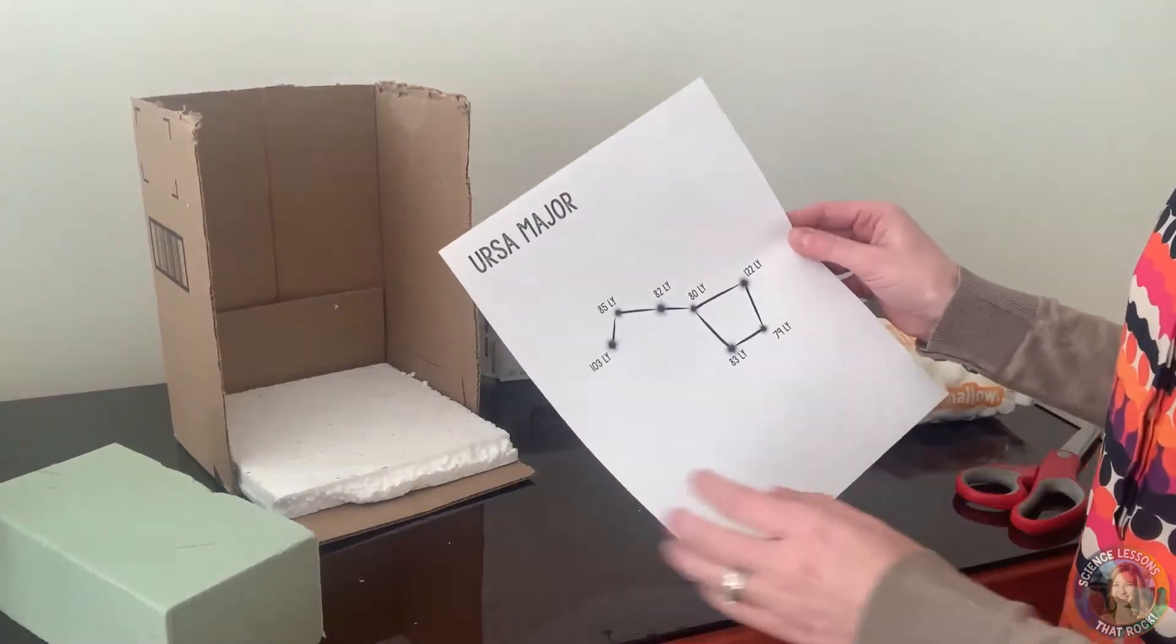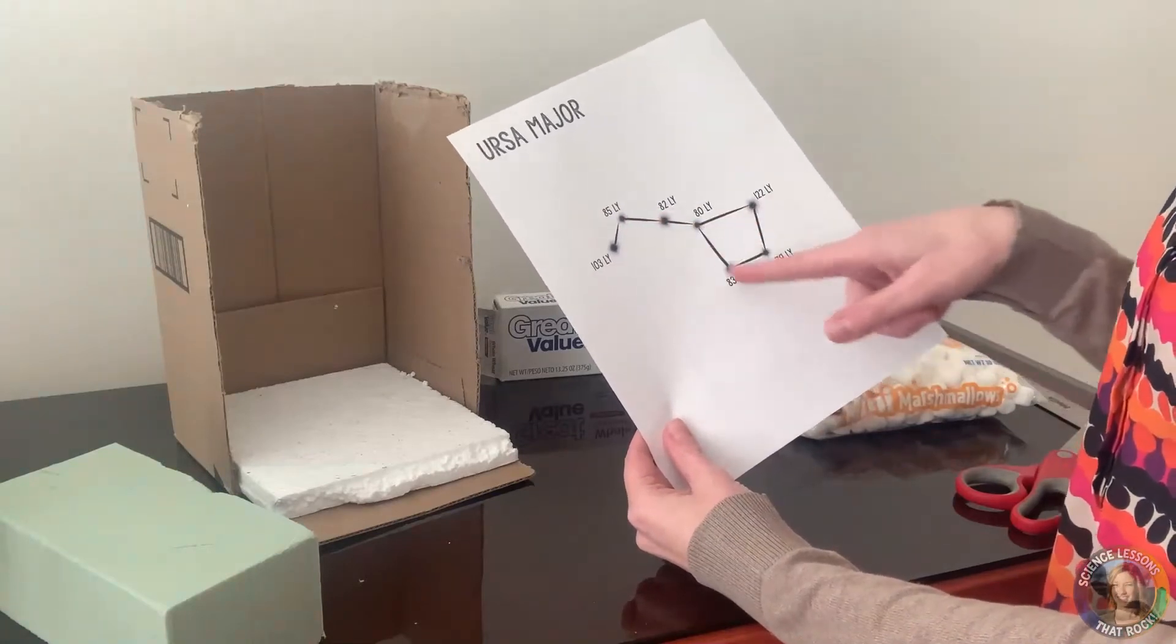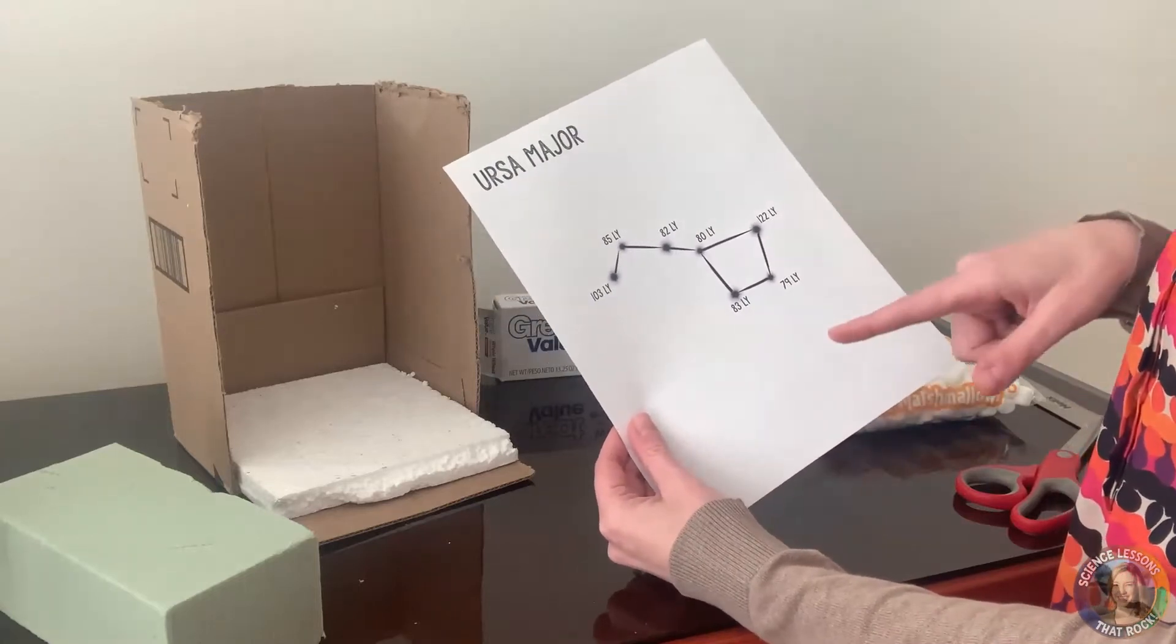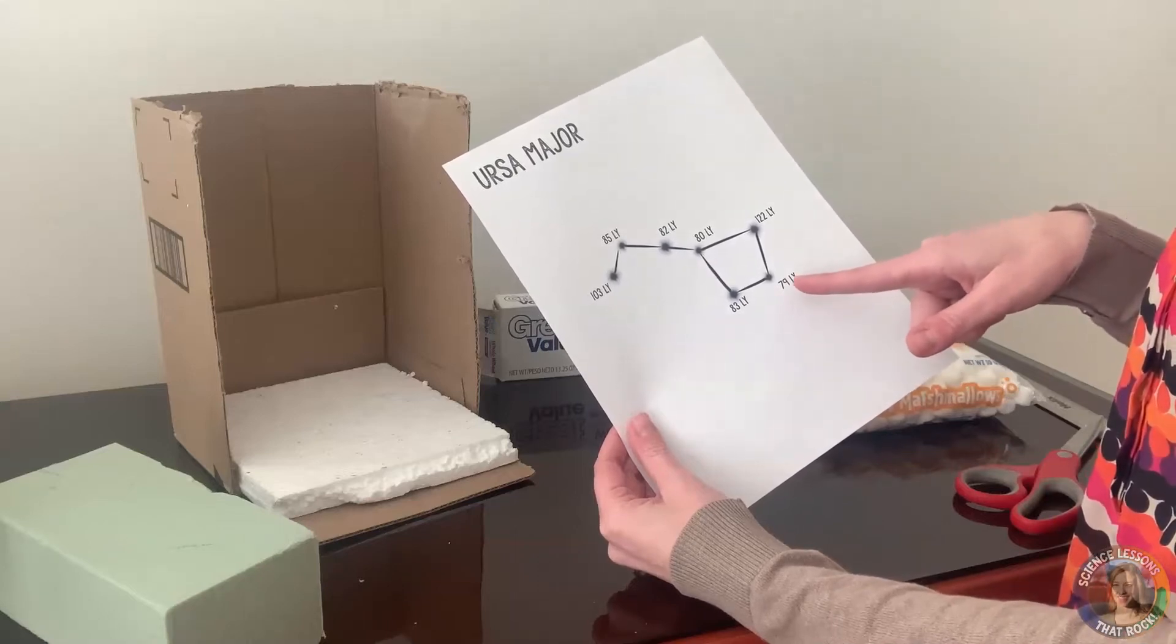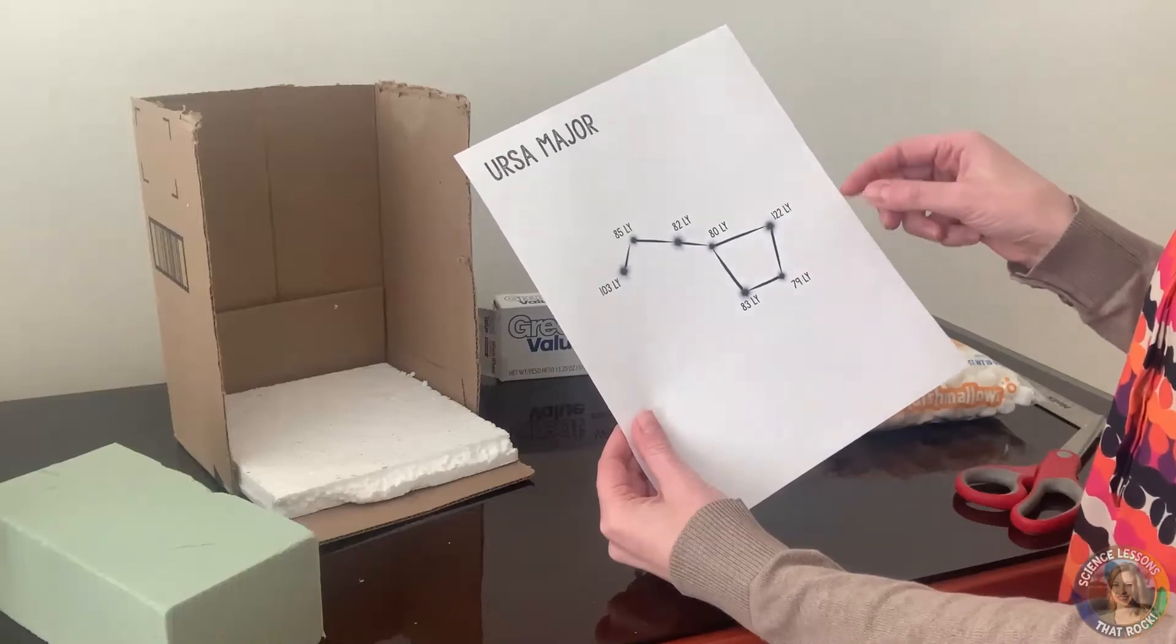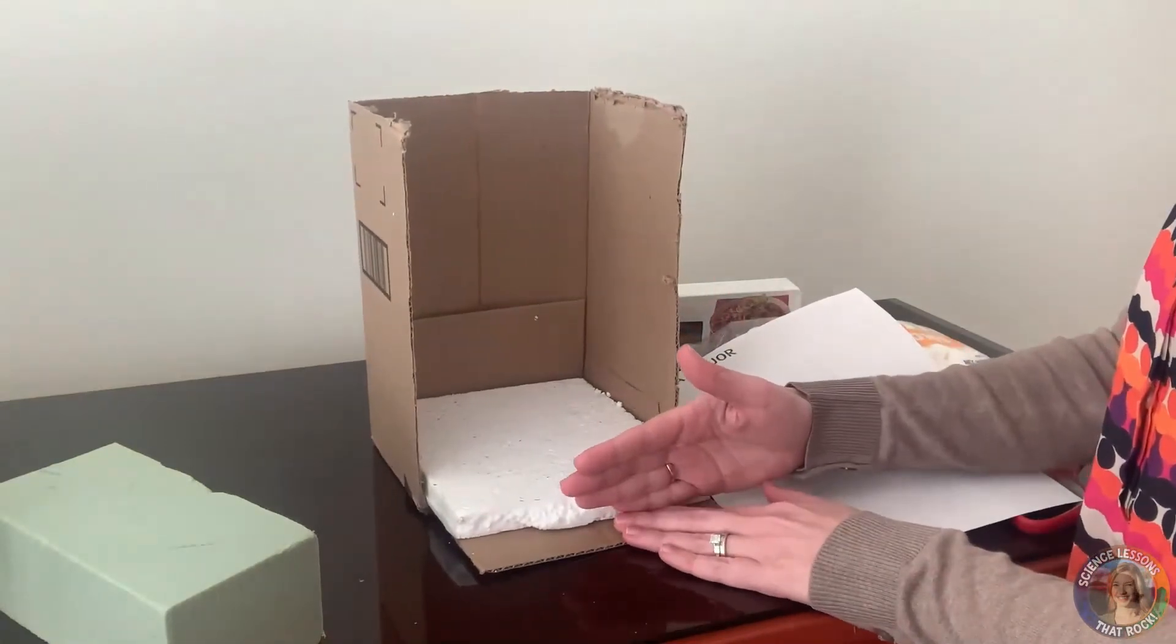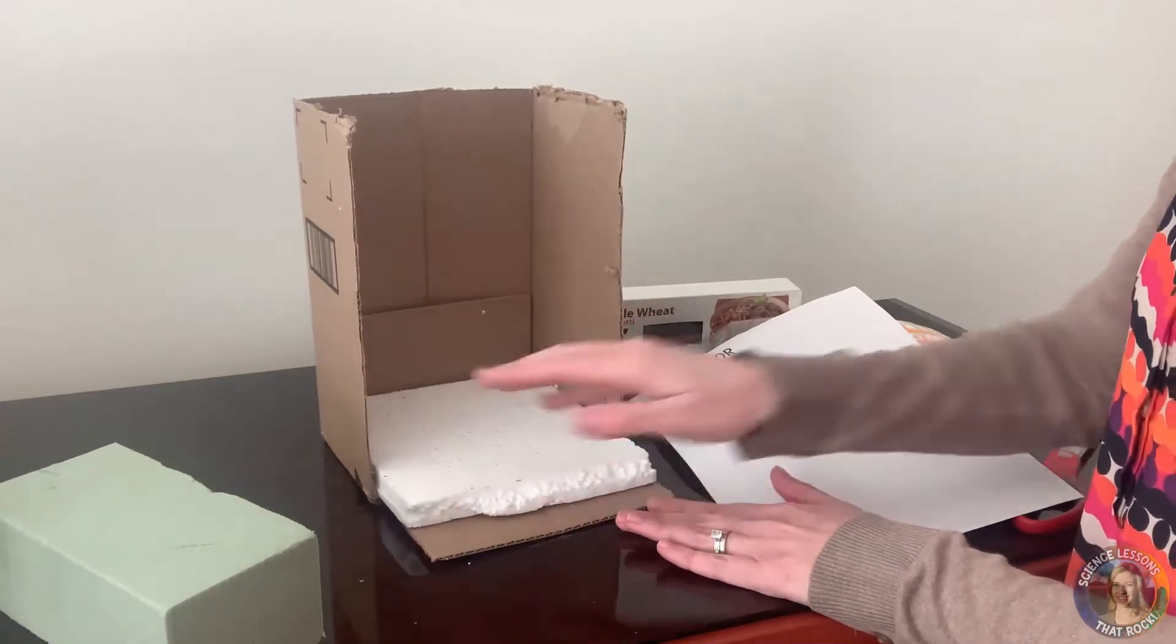Students may not know that even though constellations to the naked eye the stars look the same distance from us, they could actually be very far apart. So in this constellation we have stars that range from 79 light years away from Earth all the way to 122 light years. So they're going to be measuring how far back from Earth, if the front of the box or the foam is where Earth is, how far away would they put the star with the spaghetti and marshmallow.